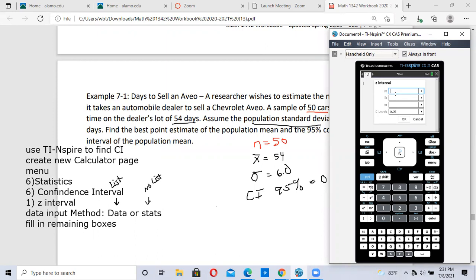We already wrote down that our population standard deviation was 6.0, our mean was 54, and the number of items that we're trying to sell was 50. We're doing a 95% confidence interval. This is everything filled out. Once you have everything filled out, we hit OK.